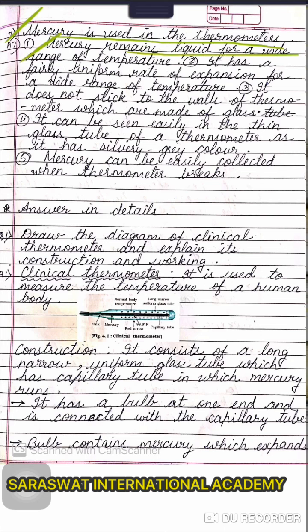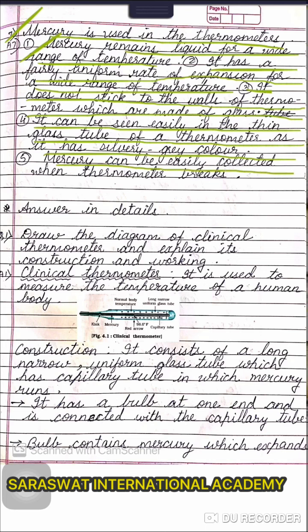Number seven: mercury is used in thermometers. Mercury remains liquid for a wide range of temperature. It has a fairly uniform rate of expansion for a wide range of temperature. It does not stick to the walls of the thermometer. It can be seen easily in the thin glass tube of a thermometer as it has a silvery-gray colour. Mercury can be easily collected when the thermometer breaks. So, mercury is used in thermometers.